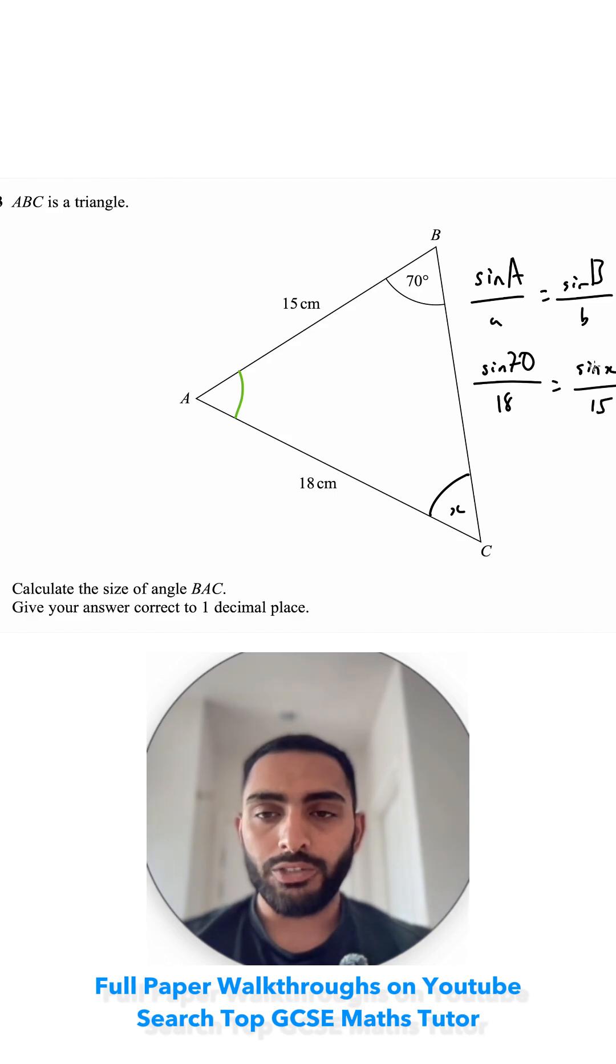We just need to rearrange this. On the right hand side, it's being divided by 15, so I'm going to multiply by 15. So 15 sine 70 over 18 is equal to—I've got sine of X left and I want to move this sine over to the other side. I've got the inverse sine on this side and all of that will be in brackets, is equal to X.